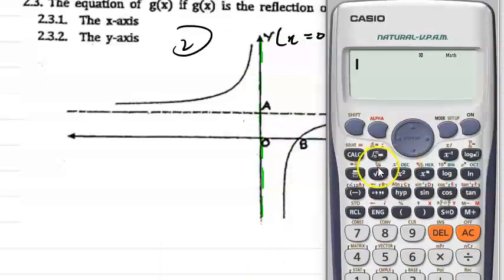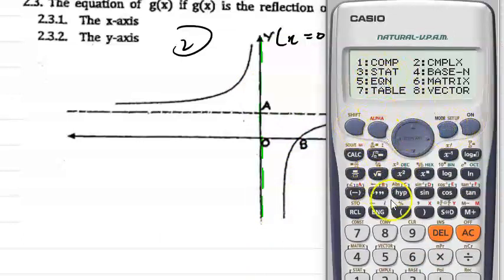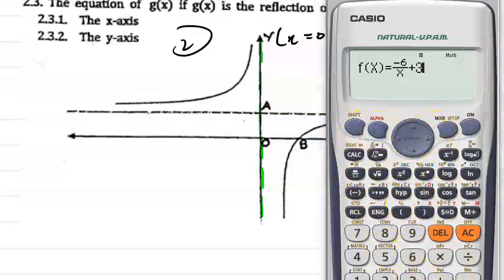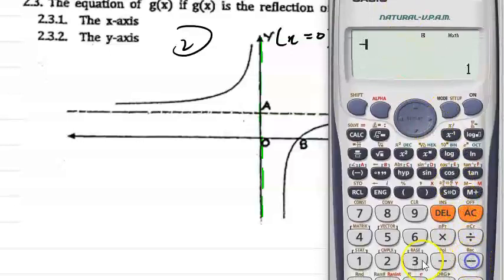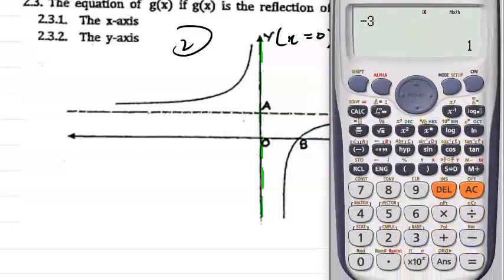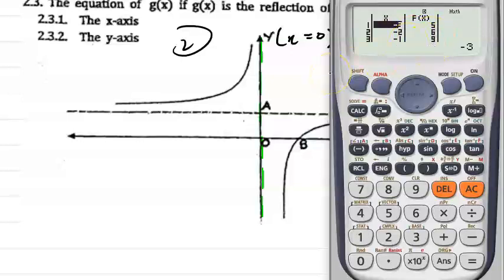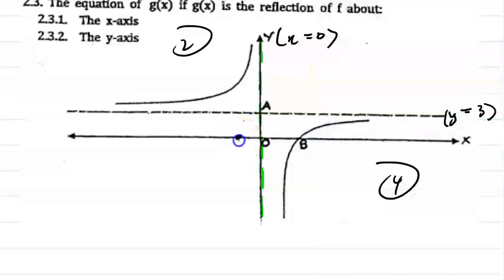If you want to sketch this graph using a calculator, you can use the table mode. So you put in minus 6 over x plus 3, going from minus 3 to 3 with a step of 1. You can see: minus 3 gives 5, minus 2 gives 6, minus 1 gives 9.